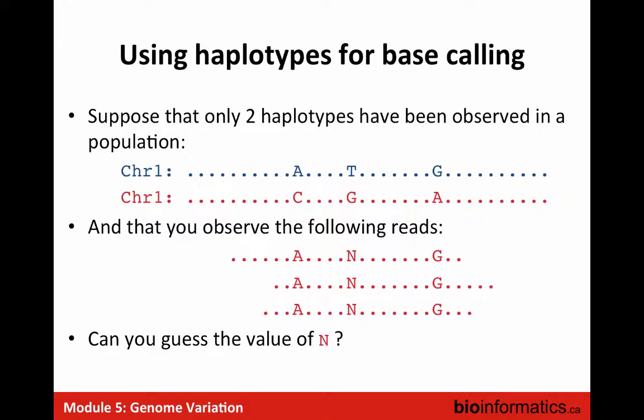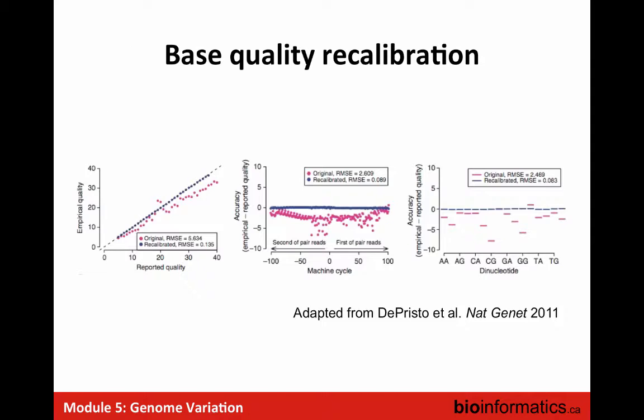For annotation you can look at frequency in 1000 Genomes and similar databases. Within GATK you have two modes: sample-by-sample calling, or feeding multiple samples and using the HaplotypeCaller module. The difference is whether you're using the relatively simple formula with data from one sample, or incorporating information from other samples and haplotype structure.